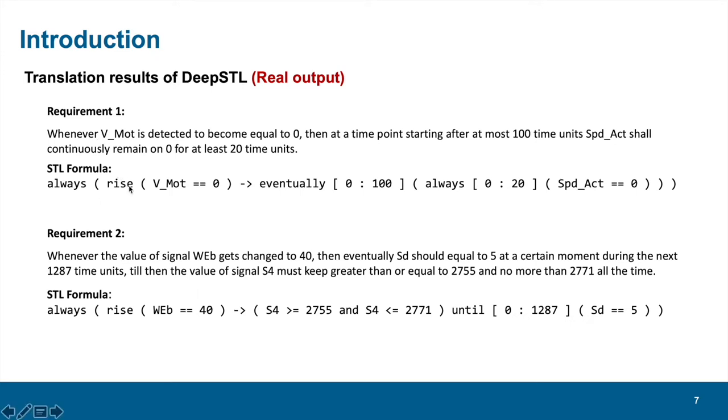These results are all correctly translated. The first example says, whenever V-mode is detected to be zero, please look at here. Then at the time starting after at most 110 units, look here. This signal should continuously remain on zero, look here, for at least 20 time units, here. So, eventually means something will be true at a certain time in the future, and always means a certain property should keep true without interruption for some period of time.